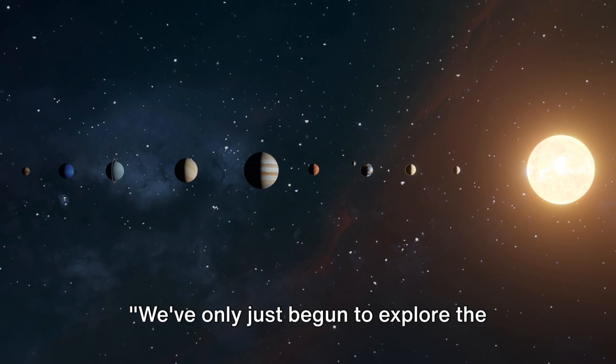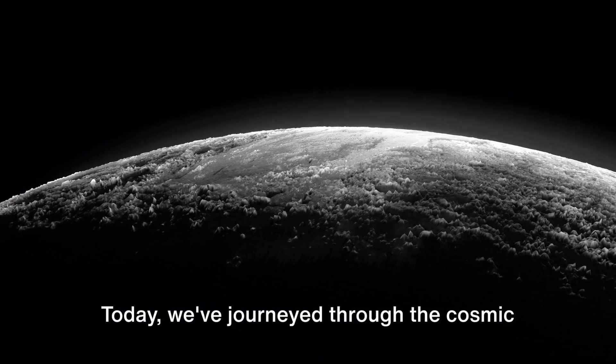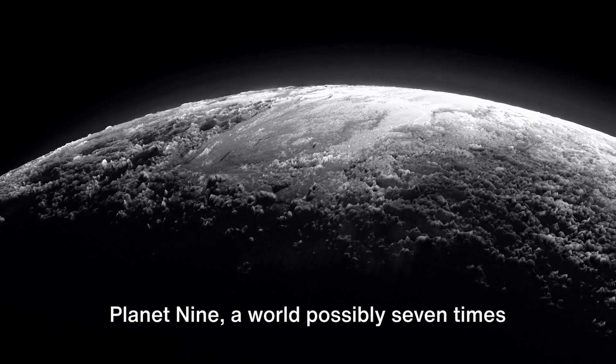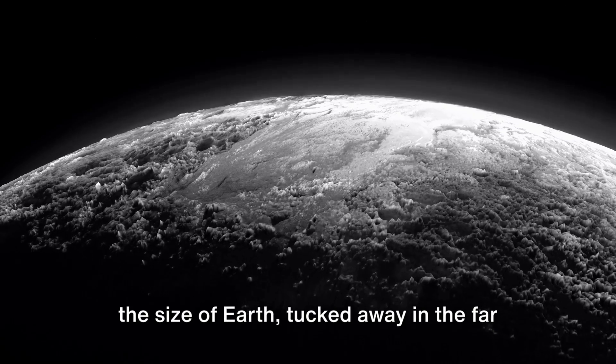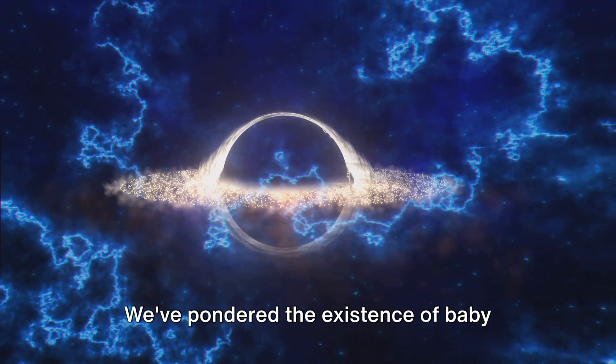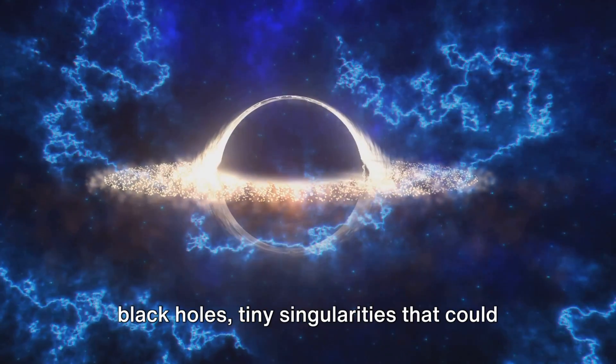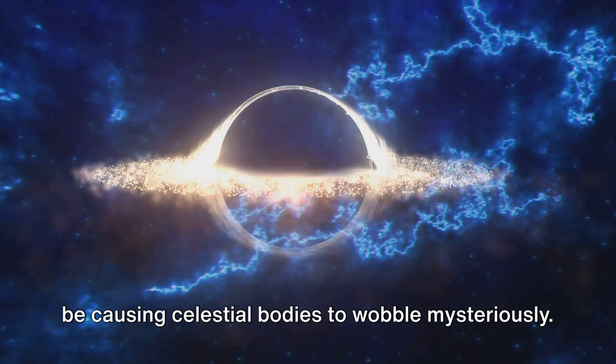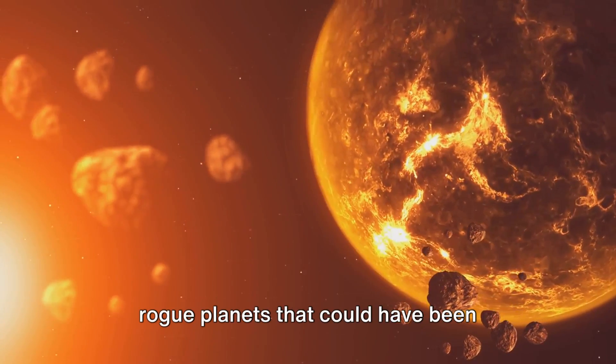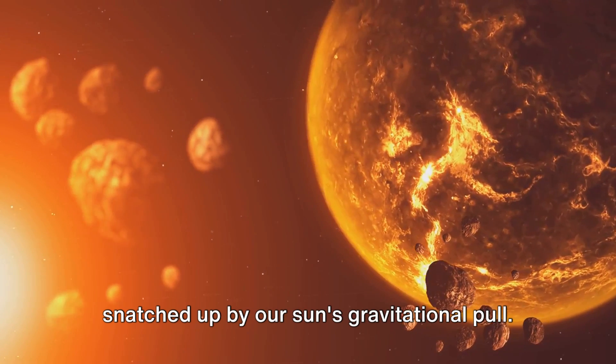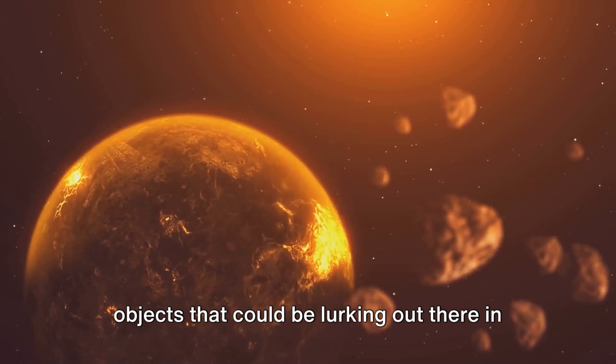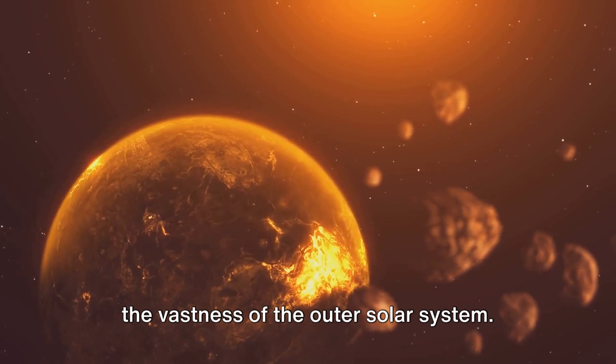We've only just begun to explore the outer solar system's secretive residence. Today, we've journeyed through the cosmic wilderness, speculating about the elusive Planet Nine, a world possibly seven times the size of Earth, tucked away in the far reaches of our solar system. We've pondered the existence of baby black holes, tiny singularities that could be causing celestial bodies to wobble mysteriously. And we've imagined captured alien worlds, rogue planets that could have been snatched up by our sun's gravitational pull. These are just a few of the enigmatic objects that could be lurking out there in the vastness of the outer solar system.